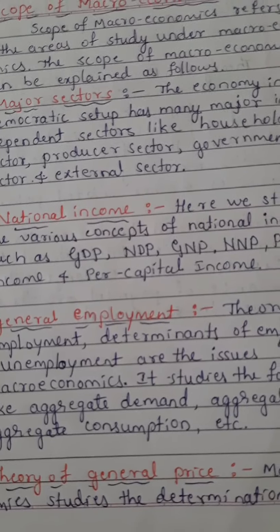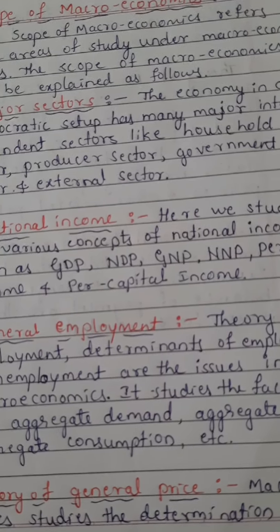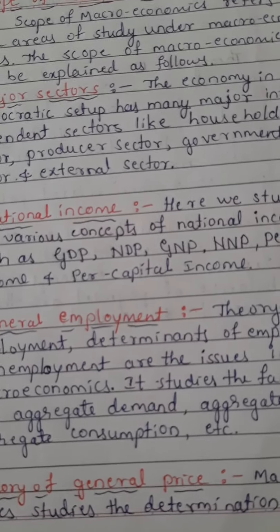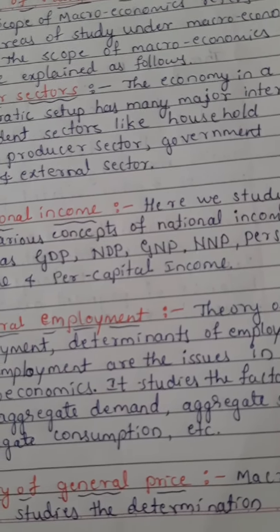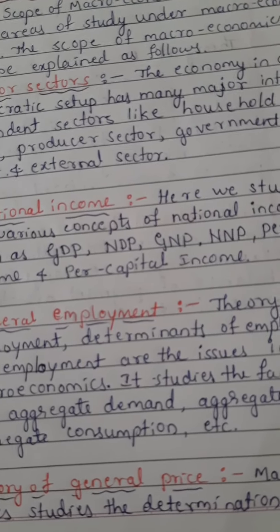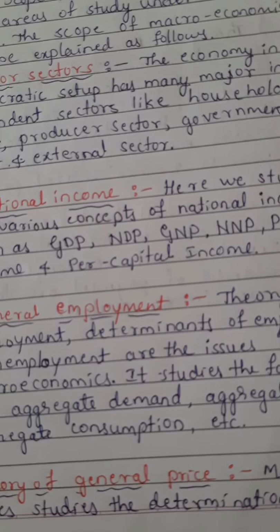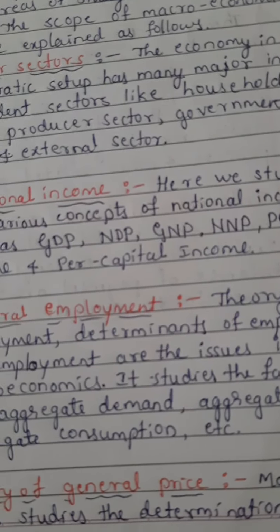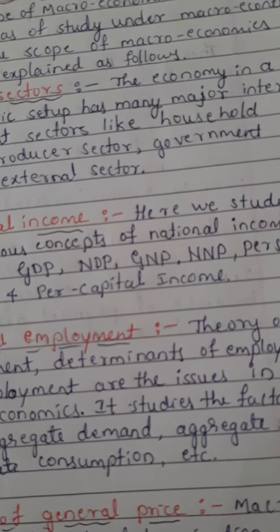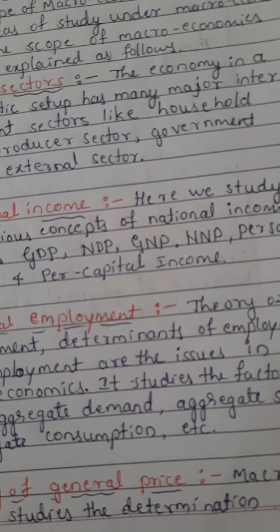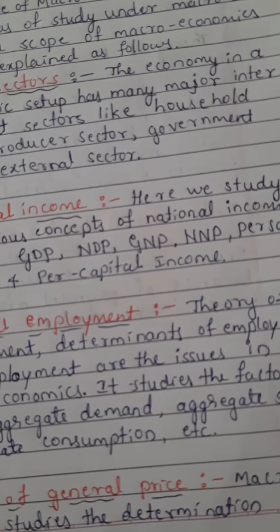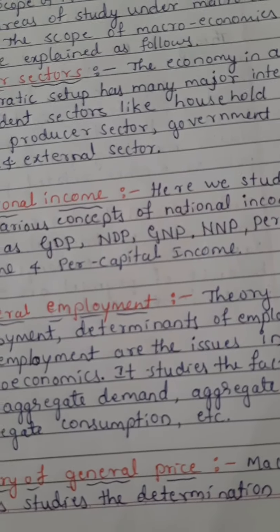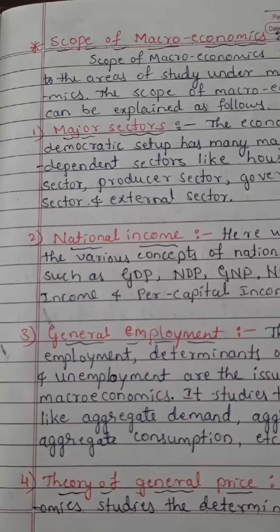The macroeconomics approach covers a wide range of economic variables such as national income, aggregate employment, money, general price level, aggregate demand and supply, consumption, investment, and expenditure. These variables are the important components of the subject matter of macroeconomics. The scope of macroeconomics can be explained as follows.